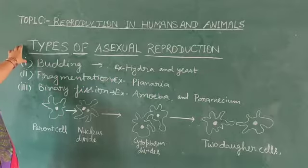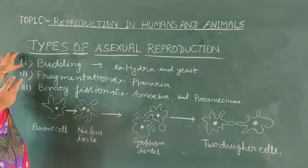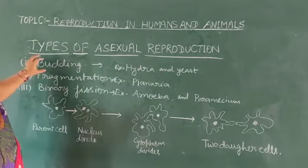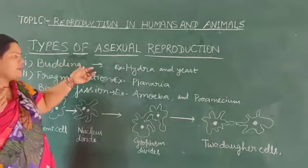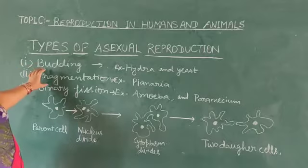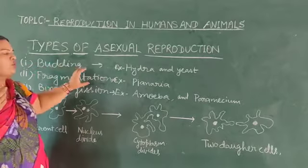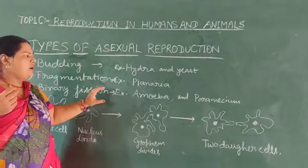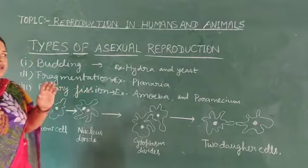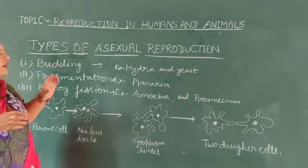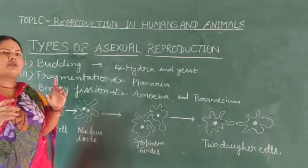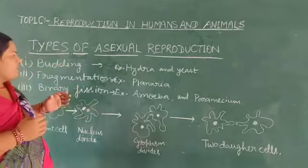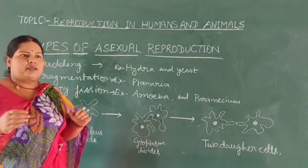Asexual reproduction is found in three forms: first, budding — for example Hydra and yeast; second, fragmentation — found in Planaria; third, binary fission — found in Amoeba and Paramecium. Students, always remember that asexual reproduction is found in lower chordates or non-chordates, and sexual reproduction is found in chordates.